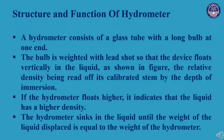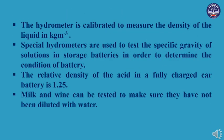The hydrometer is calibrated to measure the density of liquids in kg per cubic meter. It is used to test the specific gravity of the solution in a storage battery in order to determine the condition of the battery. The liquid density of the acid in a fully charged car battery is 1.25 kg per cubic meter.